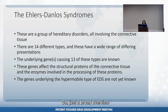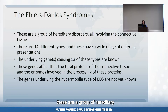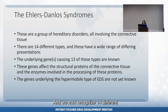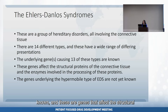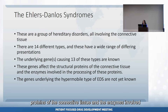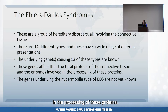Just a broad overview of the Ehlers-Danlos syndromes. These are a group of hereditary disorders all involving the connective tissue, and we now recognize 14 different types of Ehlers-Danlos syndrome with a wide range of differing presentations. The underlying genes for 13 of these types are known — genes that affect the structural proteins of the connective tissue and the enzymes involved in the processing of these proteins.